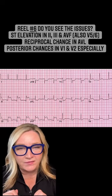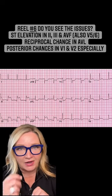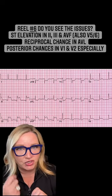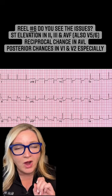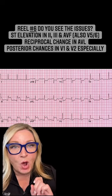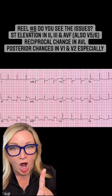Any time a patient has an inferior wall MI, we've got to go hunting for damage on two other walls. That would be the right ventricular wall and the posterior wall.